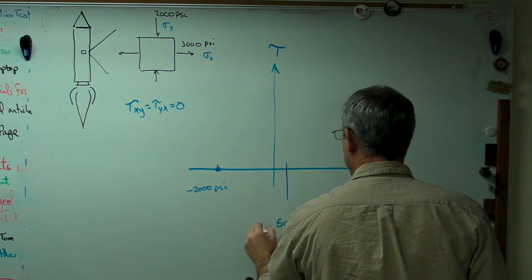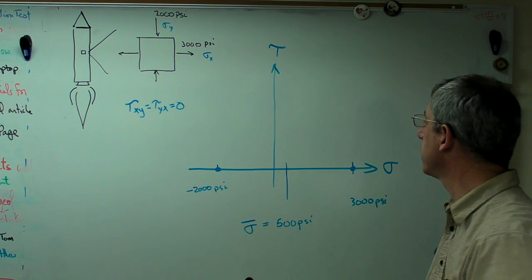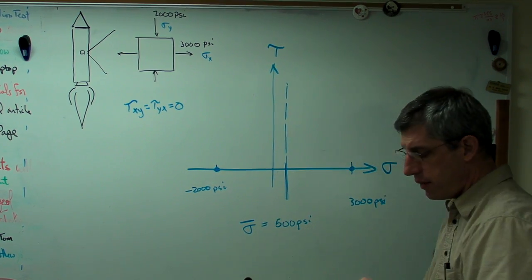And that, we're going to call that sigma bar, the average normal stress. I'm going to put a vertical line right there.